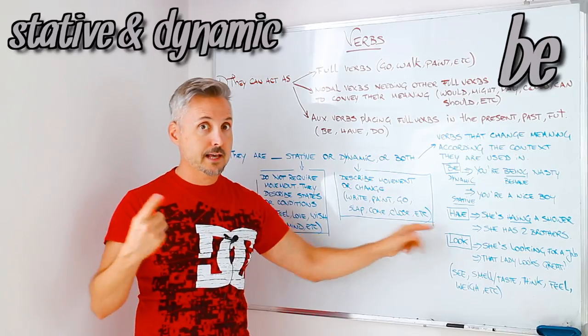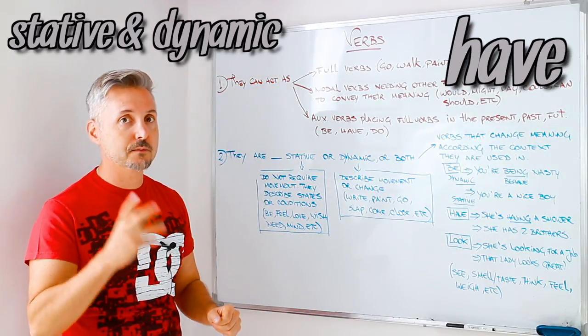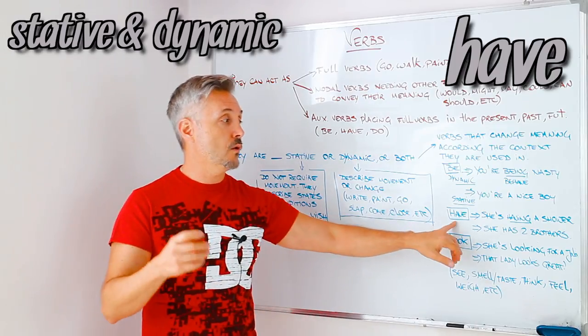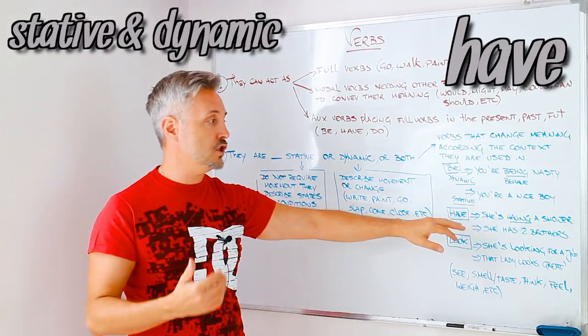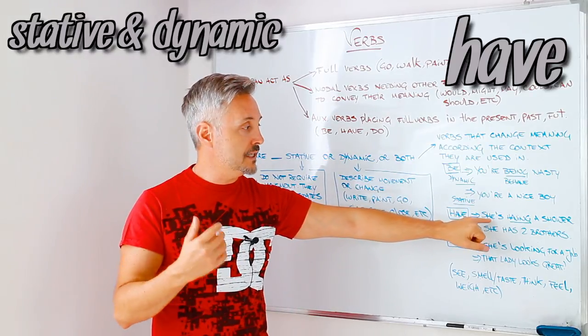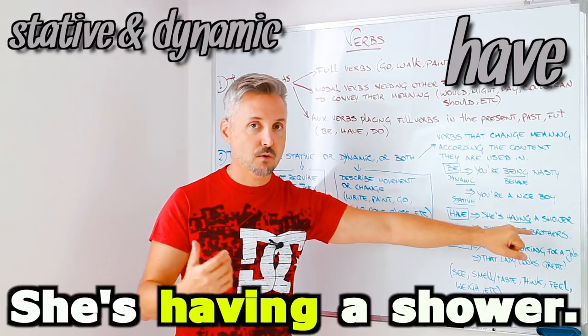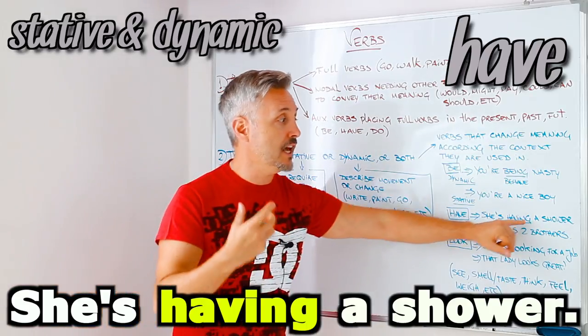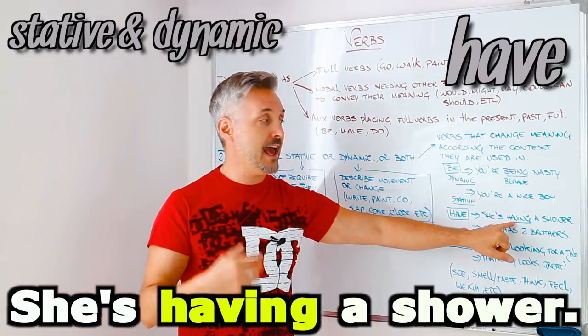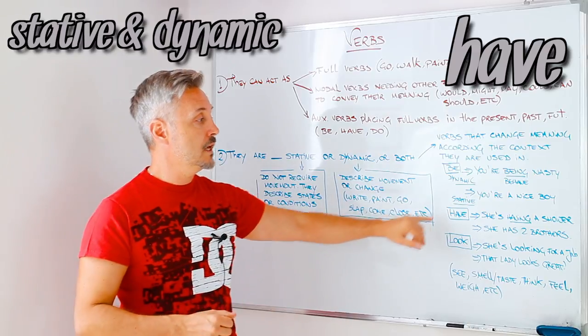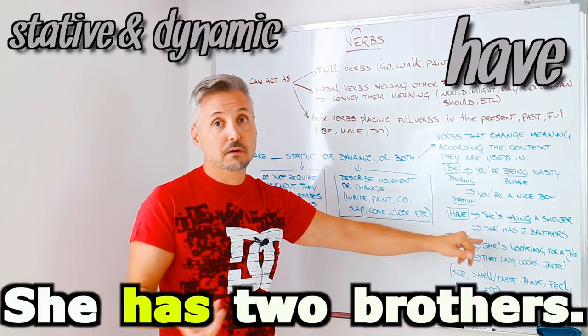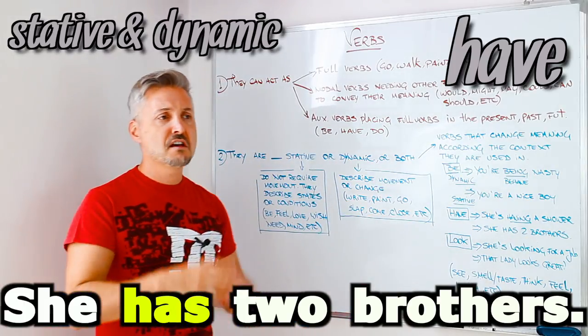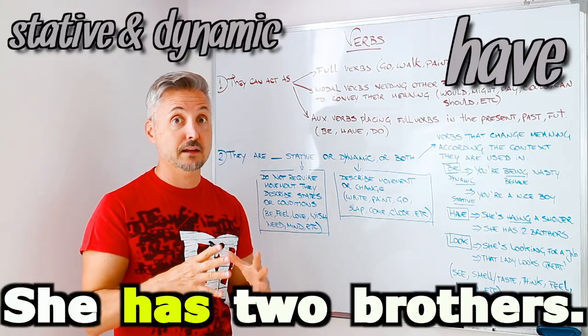So, let's look at another example. Have, with a verb to have. Yes, have can be both dynamic and stative. So, with the dynamic usage, I gave you this example. She's having a shower. To have a shower or to take a shower in American English. She's having a shower. In this case, having is dynamic. So, have, as a stative verb, is like, she has two brothers. Or, she has tons of books. Okay, it's a stative verb.